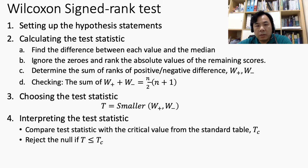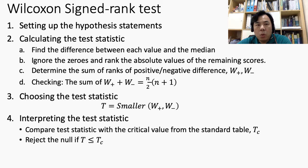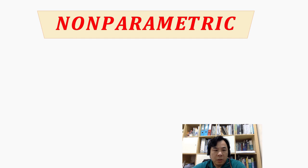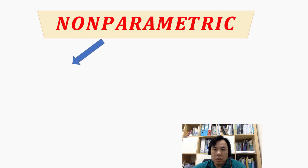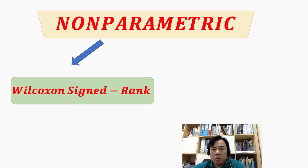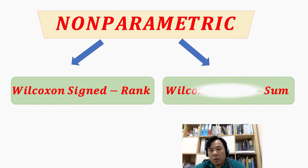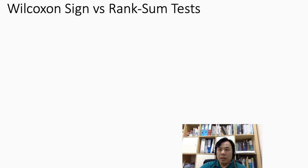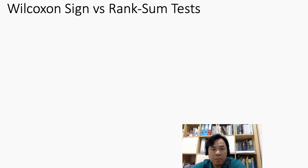Next we look at another Wilcoxon test — the Wilcoxon rank sum test, as opposed to the Wilcoxon signed rank test. Under non-parametric tests, we can carry out the sign test, the Wilcoxon signed rank test, and additionally the Wilcoxon rank sum test. The key difference between these two Wilcoxon tests will be highlighted next.